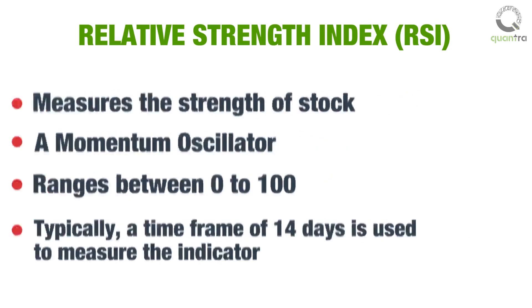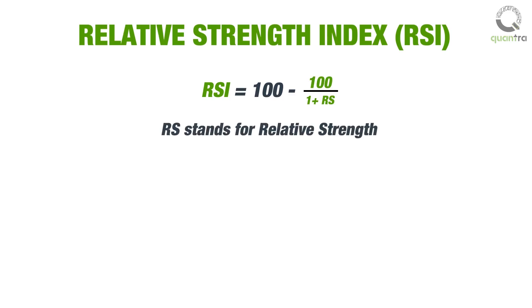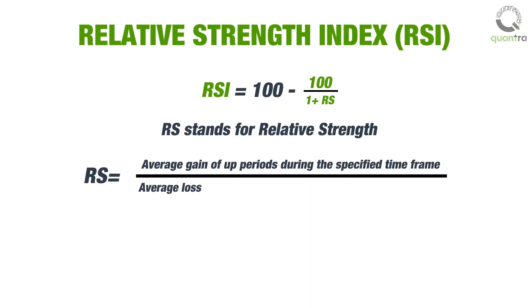RSI can be calculated using the simple formula: RSI = 100 minus (100 divided by 1 plus RS), where RS stands for Relative Strength, which is calculated as the average gain of up periods during the specified time frame divided by the average loss of down periods during the specified time frame.